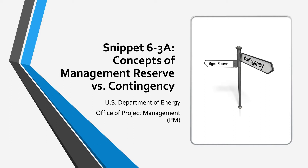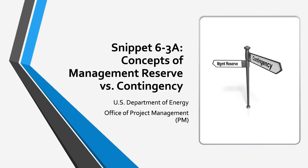Snippet 63A is a discussion of management reserve and contingency concepts, purposes, and uses. Snippet 63B provides detailed scenarios of how normal project changes impact the performance measurement baseline, management reserve, projected variances at completion, and DOE contingency.